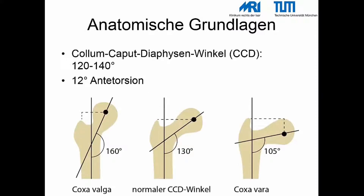Wichtig ist die Wiederholung der anatomischen Grundlagen. Der proximale Femur hat einen Kolumna-Kaput-Diaphysen-Winkel (CCD) zwischen 120 und 140 Grad. Darüber hinaus ist die Schenkelhalsachse um ungefähr 12 Grad nach vorne gedreht, hier als Antitorsion bezeichnet.